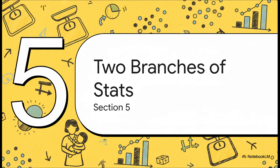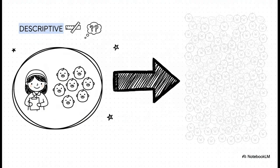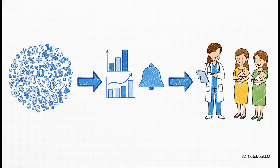Our midwife has organized her data, found the center, and understands the spread. Now it's time to put it all together and answer her big original question. This is where the two main branches of statistics finally come together. Everything we've done so far — making the charts, finding the mean — that's all called descriptive statistics. It does a perfect job of describing the small group of babies she actually measured. But using inferential statistics, she can take what she learned from her small sample and make an educated guess — an inference — about all the babies in her entire district. She can now say with some confidence that the average weight for the whole community is probably around 3.05 kilograms. She started with a messy, confusing list of numbers, but by applying these basic principles of biostatistics, she transformed that raw data into real knowledge — and with that knowledge, she can make informed, evidence-based decisions that will actually help the mothers and babies she cares for.